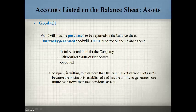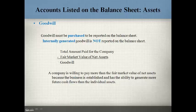Goodwill is an intangible asset because it is the right to future cash flows when purchasing another company. Goodwill is reported on the balance sheet when one company purchases another and pays more for the company than the fair market value of the net assets acquired. A company is willing to pay more than fair market value because the business is established and has the ability to generate more future cash flows than the individual assets. This ability may come from an established brand name, a strong management team, a good location, or established customers.